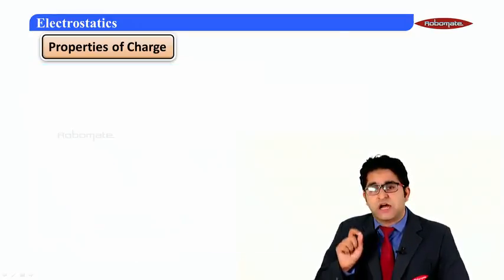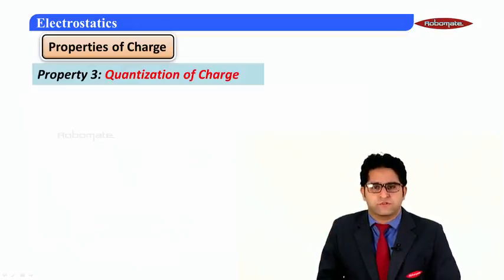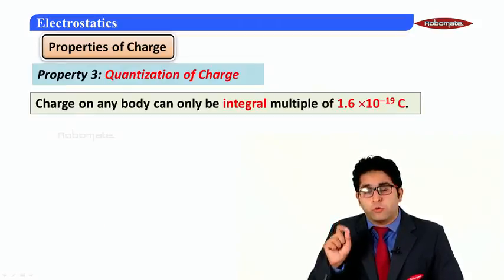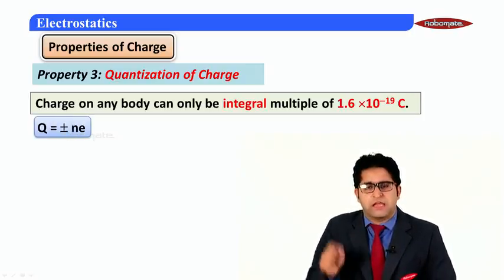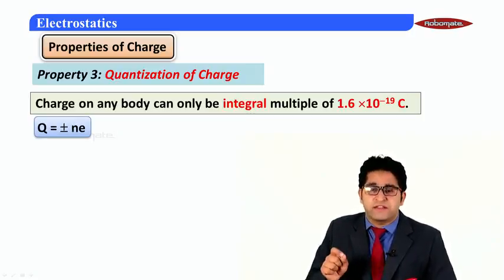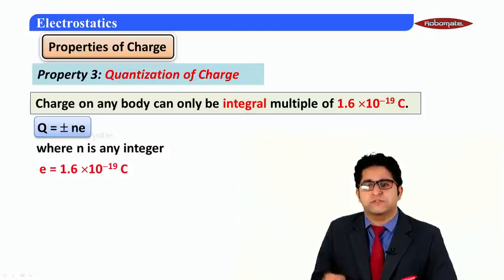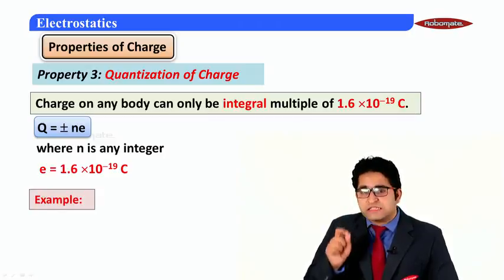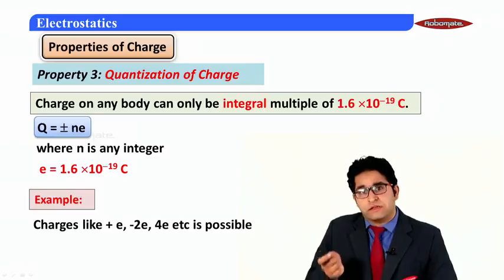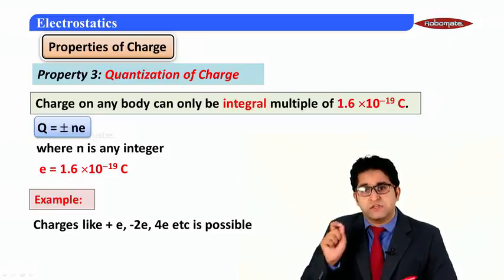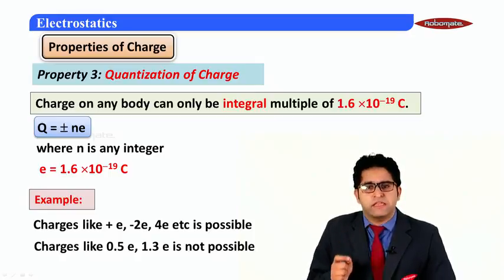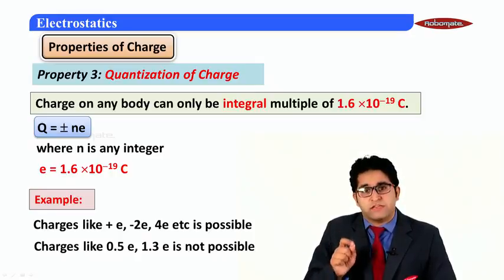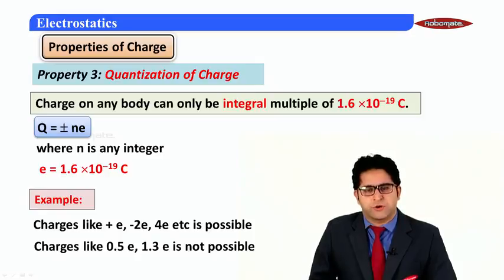The third property is quantization of charge: charge on any body can only be an integral multiple of 1.6 × 10⁻¹⁹ coulomb. Any charge is written as q = ±ne, where n is an integer and e = 1.6 × 10⁻¹⁹ C is the fundamental charge. Charges like +e, −2e, +4e are possible, but charges like 0.5e or 1.3e are not. This module has revised the term charge and its three properties.